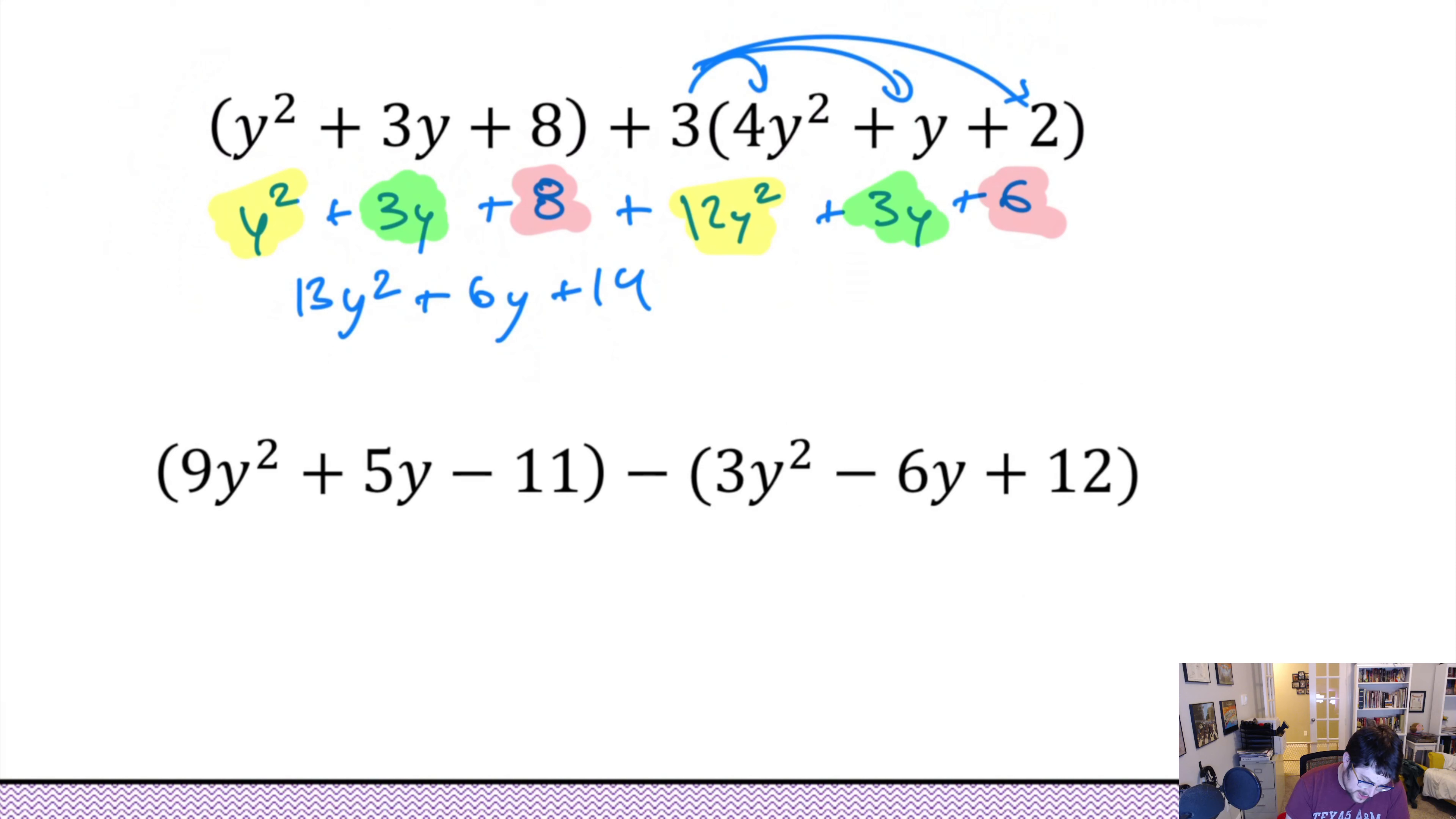Same idea with subtracting. Because for subtracting, you would distribute the minus, the negative. So, this gives us negative 3y squared. Negative of negative is a positive 6y. And minus 12. 9y squared, 5y, negative 11. All right. Let's start with our squares. Together, that is 6y squared. Next thing is just our y's. So, we have 5 plus 6. That gives us 11y. And last is just our numbers. Minus 11 minus 12 is minus 23. That's it.